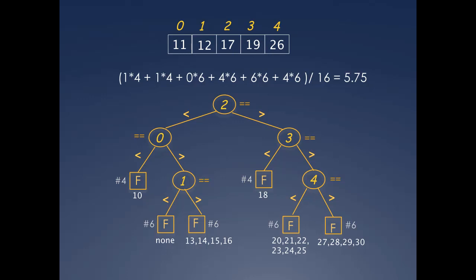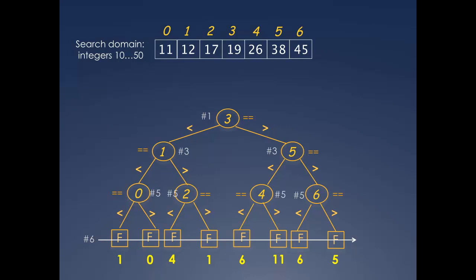Let's repeat this exercise for the array of length 7 with some values thrown in. Say the search domain is all values in the set 10 to 50. All failure nodes are at the last level and all of them incur 6 comparisons. The number of failure values are listed against each failure node. Verify that these match with your count of the failure values.